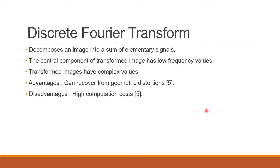Next is the Discrete Fourier Transform. It decomposes an image into a sum of elementary signals, with the central component having low frequency values. These images have complex values. The advantage of DFT is that it can recover from geometric distortions, which include rotation, scaling, and translation. However, it has high computation cost because we are dealing with complex values.